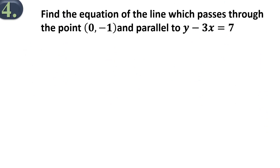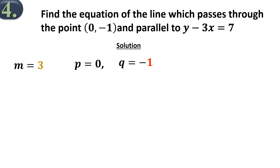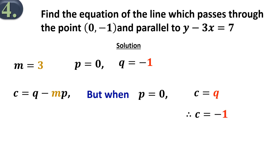Example 4: Find the equation of the line which passes through the point (0, -1) and parallel to y minus 3x equals 7. The solution. From the question, the gradient m equals 3, the x-coordinate p equals 0, and the y-coordinate q equals negative 1. Using the formula c equals q minus mp, but when p equals 0, c equals q. Therefore c will be equal to negative 1. So our required equation is y minus 3x equals negative 1.